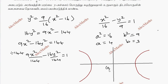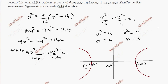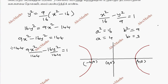The origin is (0, 0), vertex at (4, 0) and (-4, 0). This is the curve revolving about the y-axis, with y equal to 1 and y equal to 6 as the boundary lines.